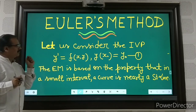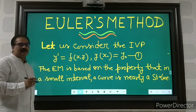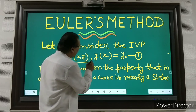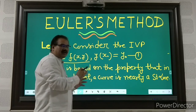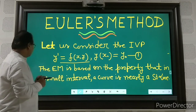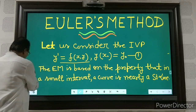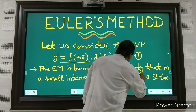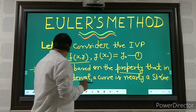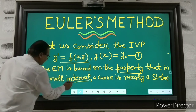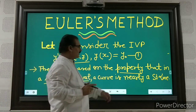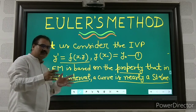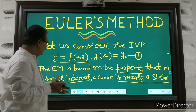What is the statement of Euler's method? Let us consider the initial value problem: y' = f(x, y), where y at x₀ equals y₀. Let us call this equation number 1. Euler's method is based on an important property — that in a small interval, a curve is nearly a straight line. This is a well-established property in mathematics, and Euler's method is totally based upon it.